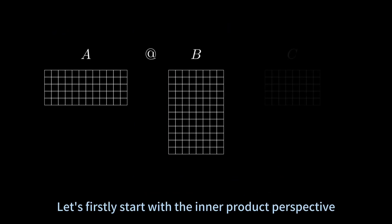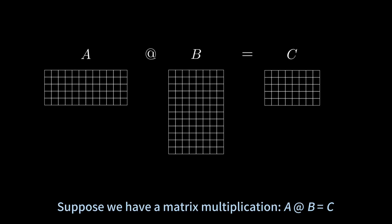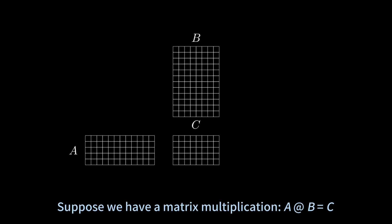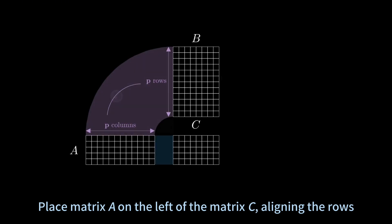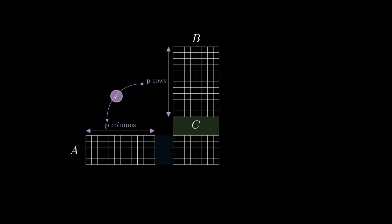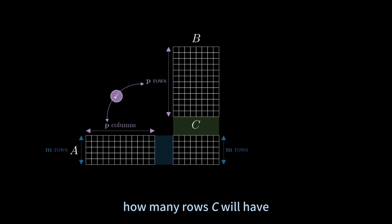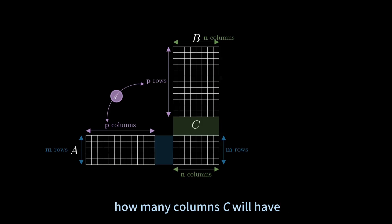Let's start with the inner product perspective. Suppose we have a matrix multiplication: matrix A times matrix B equals C. Place matrix A on the left of matrix C, aligning the rows, and place matrix B above matrix C, aligning the columns. Matrix A's number of rows tells us how many rows C will have, and matrix B's number of columns tells us how many columns C will have.